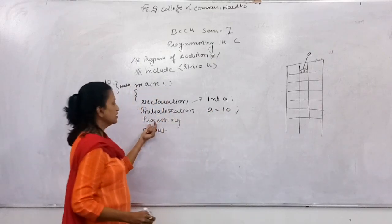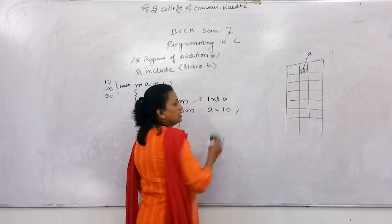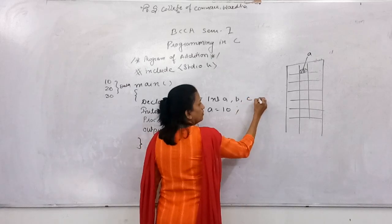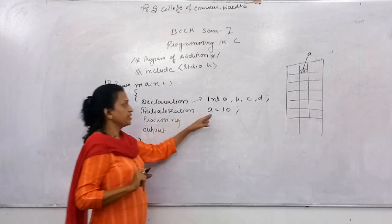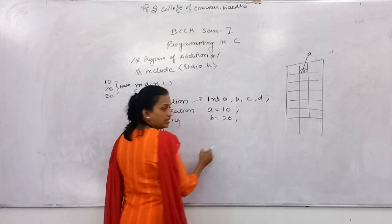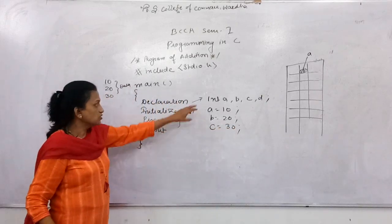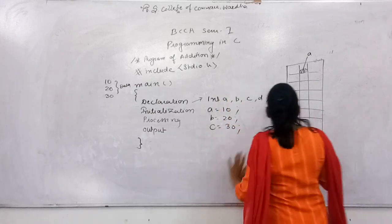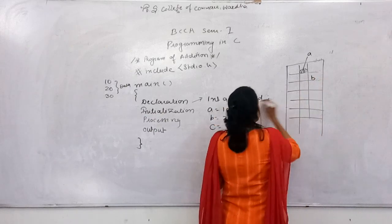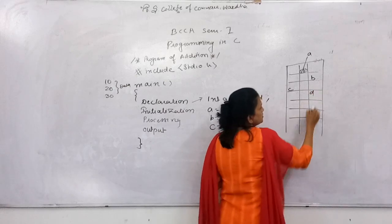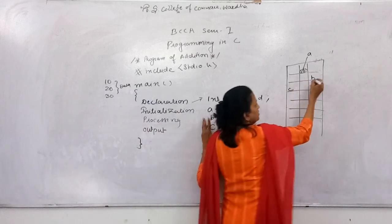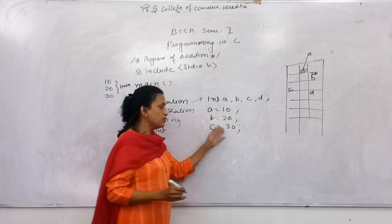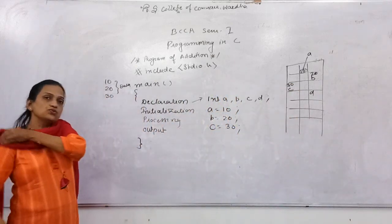This is your assignment operator — the value is assigned to A. Now, suppose you declare three or four variables. When you declare more than one variable, every variable is separated by a comma. Here we have four variables: A, B, C, D. B is initialized to 20, C is initialized to 30. Since A, B, C, D are integers, each occupies four bytes. Space is reserved for each, and the values are stored at the corresponding memory locations.